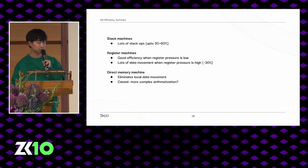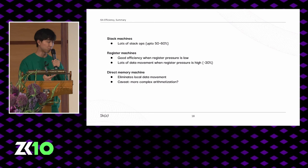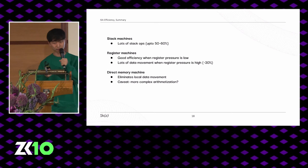The core takeaway is that stack machines have a lot of data movement ops — up to 50 to 60 percent for Solidity. Register machines have good efficiency when register pressure is low, but still many data movement operations when register pressure is high. Direct memory machines have zero local data movements but more complex arithmetization.